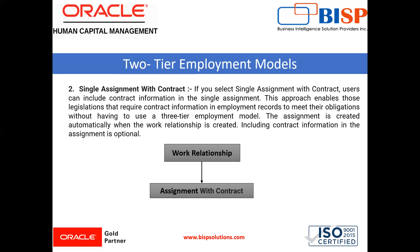You can also use the three-tier employment model when you only need to record contract details for a smaller number of employees. Contract details are captured only for employees, not for contingent workers.